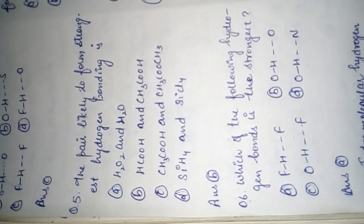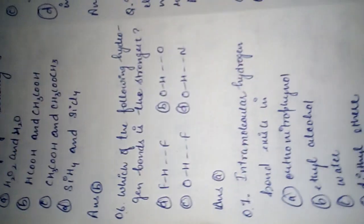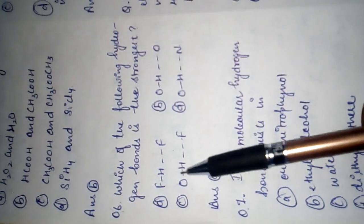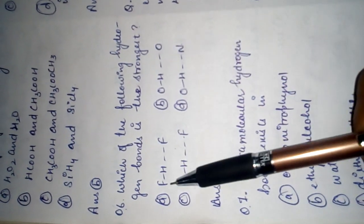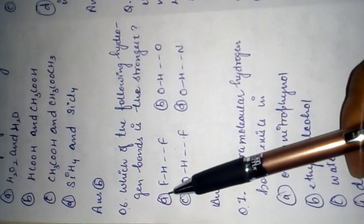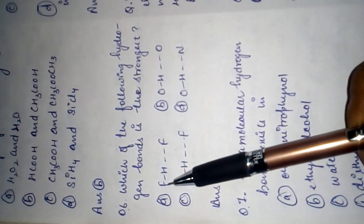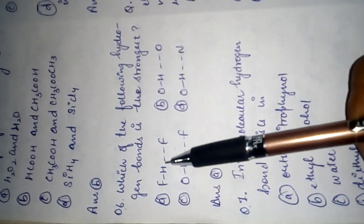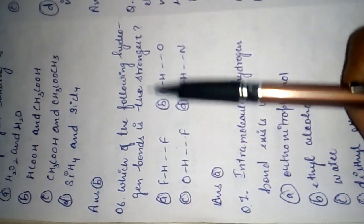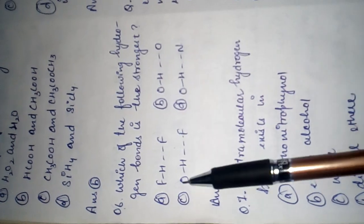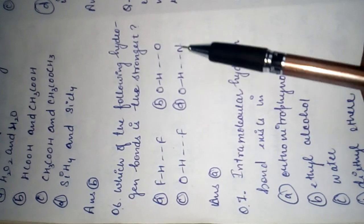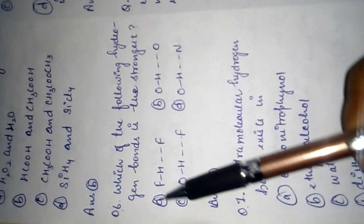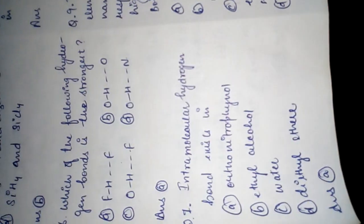Which of the following hydrogen bonds is strongest? Options: F-H…F, O-H…O, O-H…F, O-H…N. The right answer is (a) F-H…F.